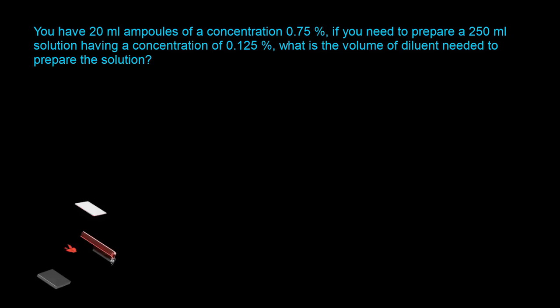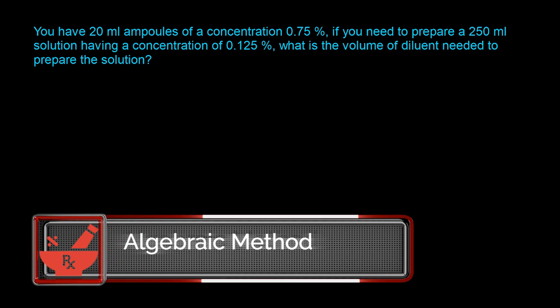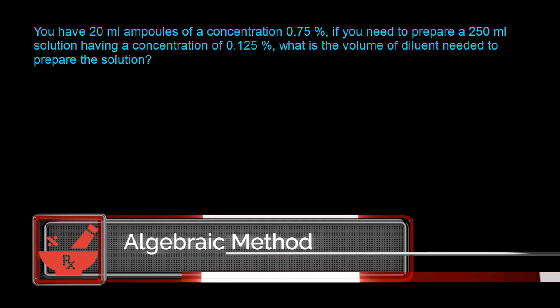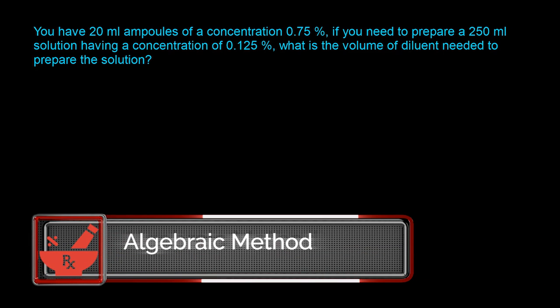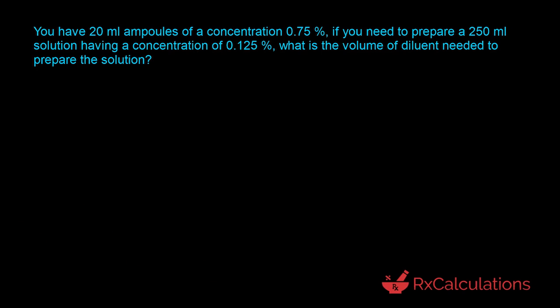To use the algebraic method we need to use the right form of the equation, and that depends on the number of components we are mixing. A quick analysis of the question shows we have the ampoule solution at 0.75% and also a diluent — so we have two things that we are mixing.